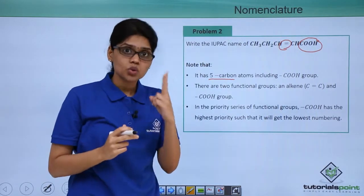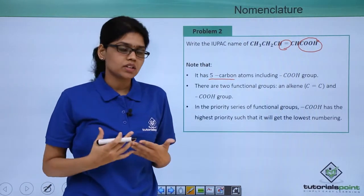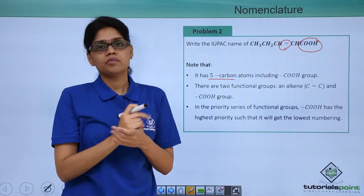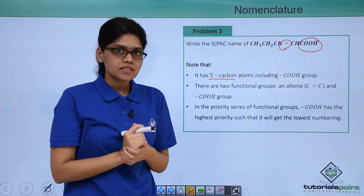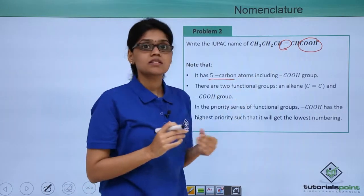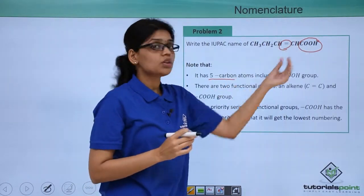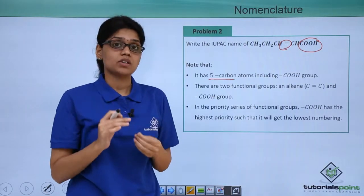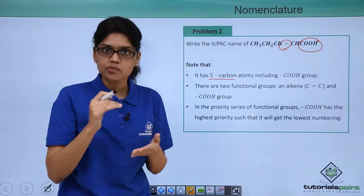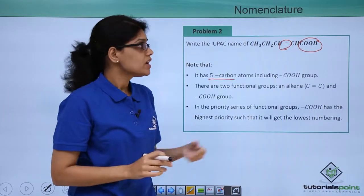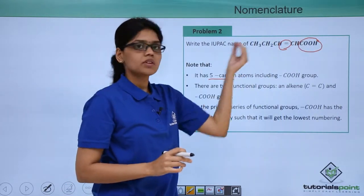Now since we have 2 functional groups, we need to determine which one will be the principal functional group and which one will act as a substituent. In this case, we can see that alkene is a type of hydrocarbon and since COOH has the highest priority, this will be having the highest priority in the priority of functional groups. Because of that, the lower numbering will start from this side.